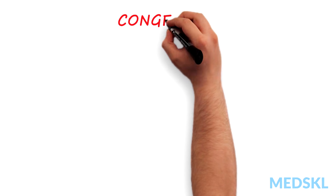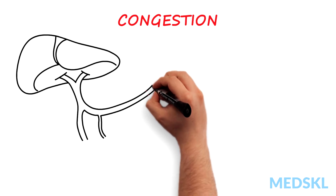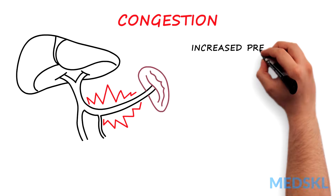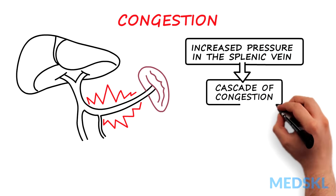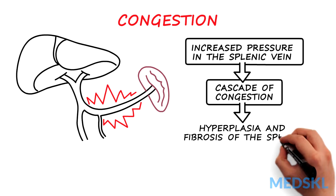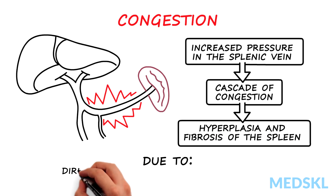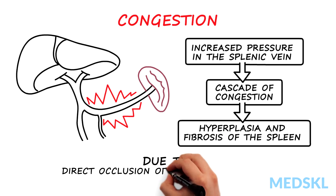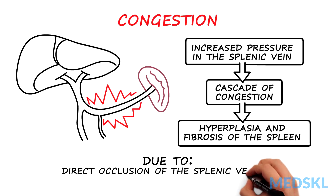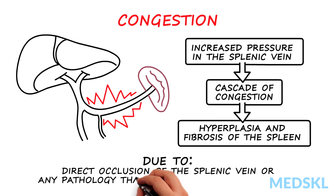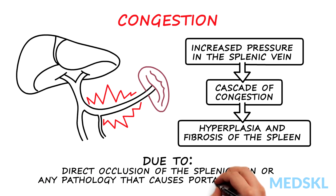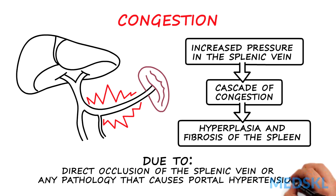First, let's look at congestion. Increased blood pressure in the splenic vein can cause a cascade of congestion, hyperplasia, and fibrosis in the spleen. This can be due to direct occlusion of the splenic vein, such as a splenic vein thrombosis or complication of pancreatitis, or any pathology that causes portal hypertension, such as cirrhosis or right heart failure.